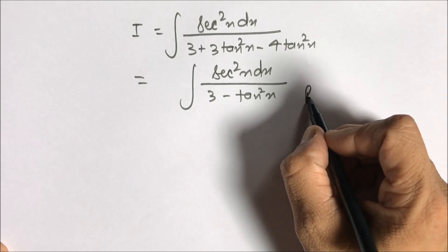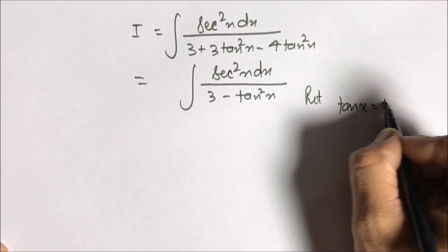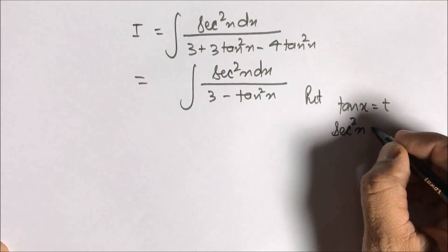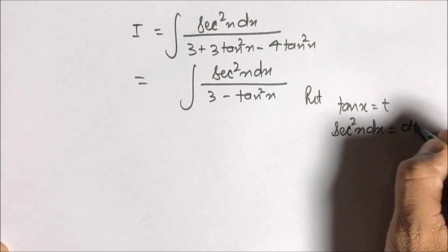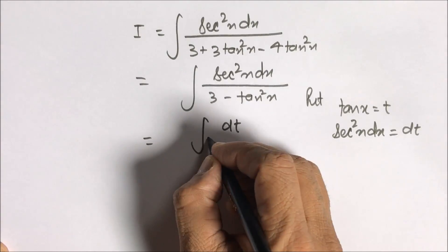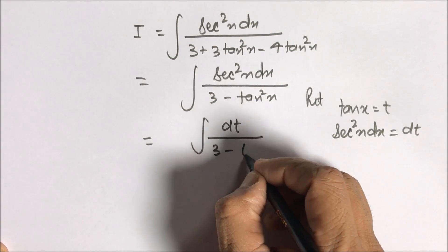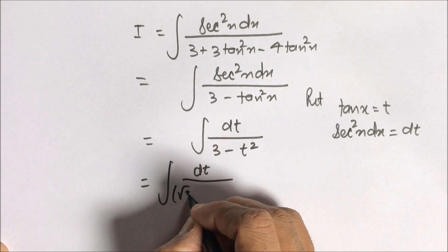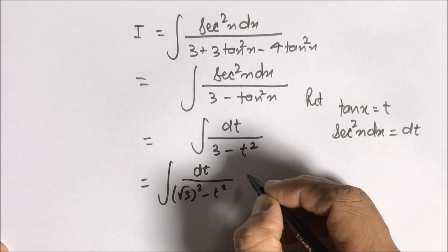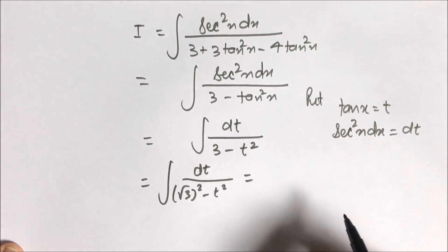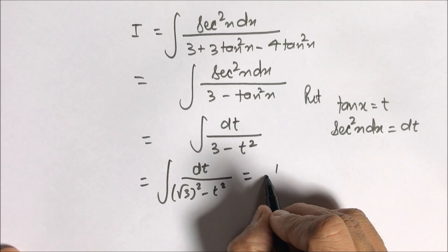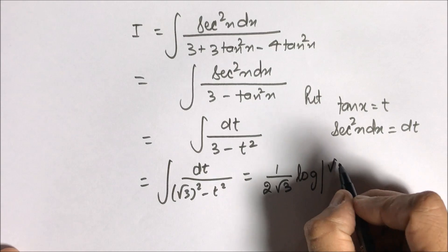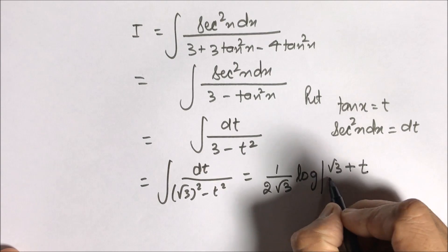Now we put tan(x) = t as our substitution, so sec²(x) dx = dt. The numerator becomes dt and the denominator becomes 3 − t². We write 3 as (√3)², so the integral takes the standard form: 1/(a² − x²) whose result is (1/2a) log|(a + x)/(a − x)|.